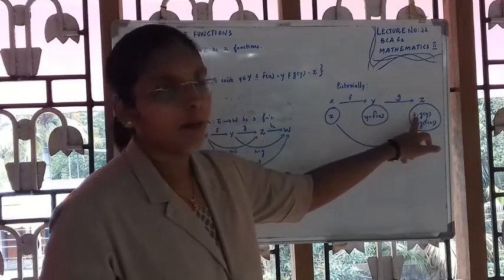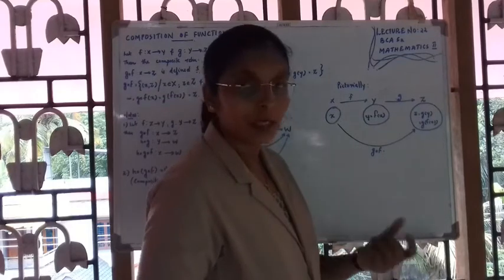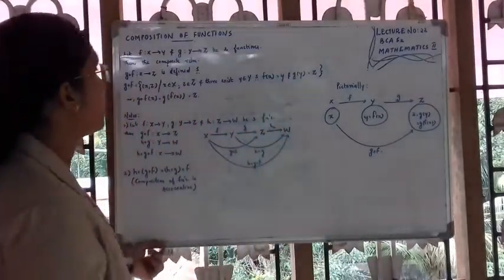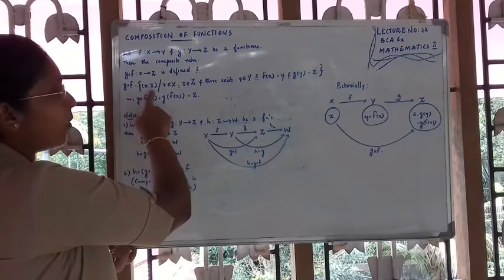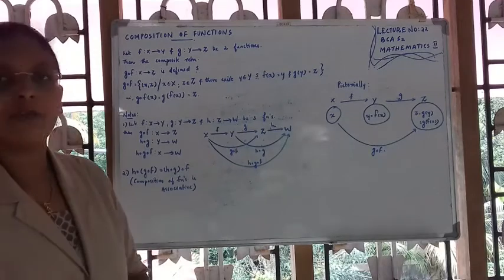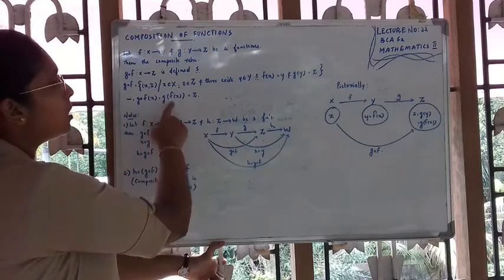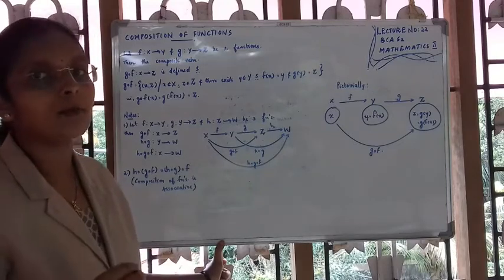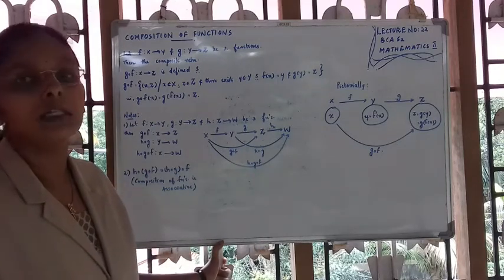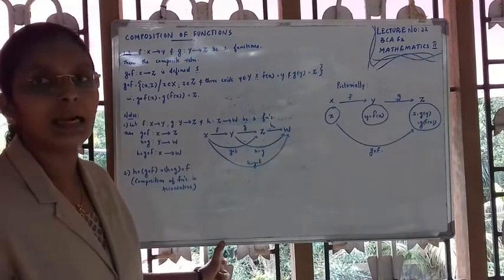Z is equal to g of Y — Z is the function of Y. G composite F is from X to Z. Using the simplified definition: G composite F of x is equal to G of F of x. This is the function G of F of x.